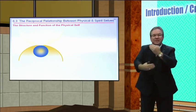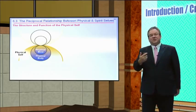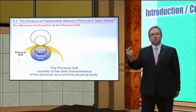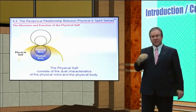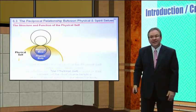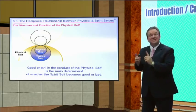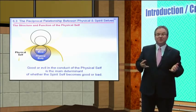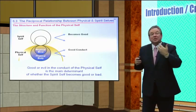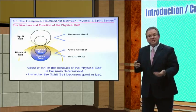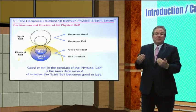Within our physical self we find two aspects: the physical mind — our electrochemical brain that governs survival instincts and functions — and the physical body. The body is important because good or evil conduct is the main determinant of the growth of our spiritual self. Good conduct and good habits lead to a good nature, a deeper heart, and a good person, while bad habits and evil conduct corrupt our spiritual selves.